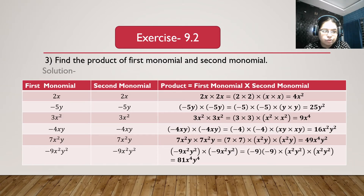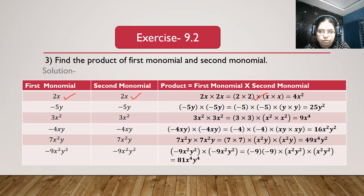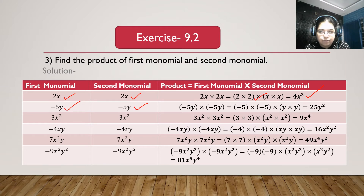Now question number 3: find the product of the first monomial and second monomial. First bit: 2x and 2x. Product is 2x multiplied with 2x, giving 2 multiplied with 2 is 4, and x multiplied with x is x square. So we get 4x square. Second bit: minus 5y and minus 5y. Minus 5 multiplied with minus 5 is 25, and y multiplied with y is y square. So we get 25y square.